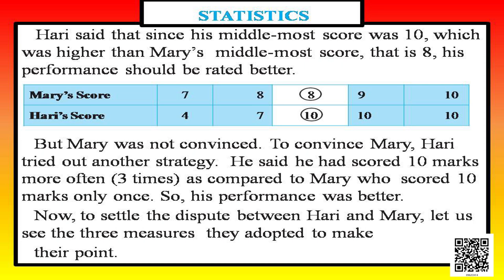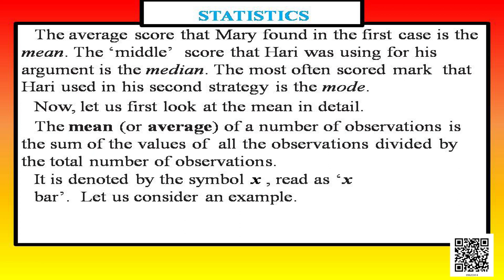But Mary was not convinced. So Hari tried another strategy — he said he scored ten marks three times as compared to Mary who scored ten only once, so his performance was better. To settle this dispute, the three measures they adopted are: the average score Mary used is the mean, the middle score Hari used is the median, and the most often scored mark is the mode.